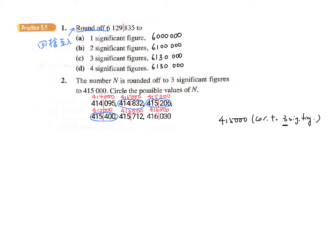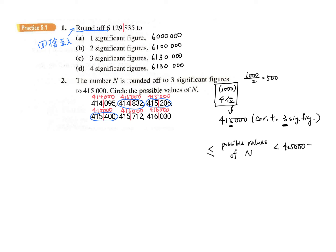Three significant figures — what is the meaning? Let's look at the topic. Three significant figures is this. Let's look at the number 18,000 — this one is 1,000. This one is 1,000. 1,000, this one is 2,500. This is the possible values of n, between the two values of n.